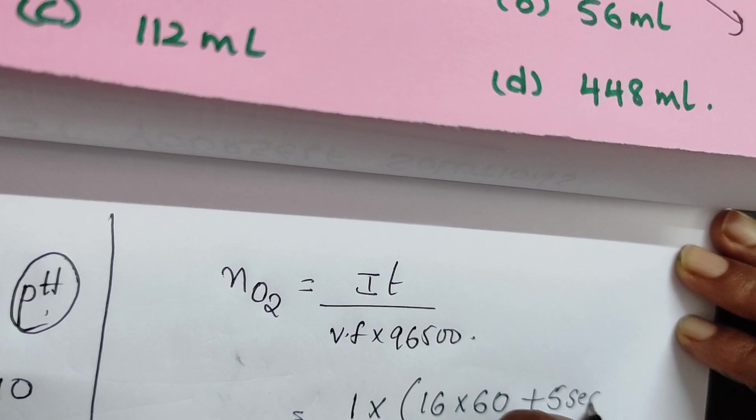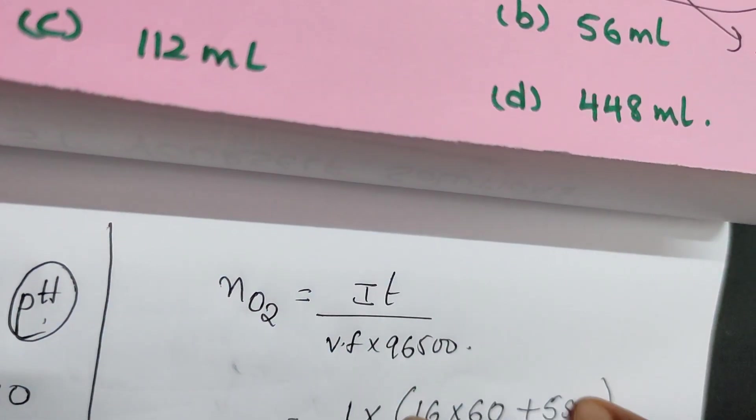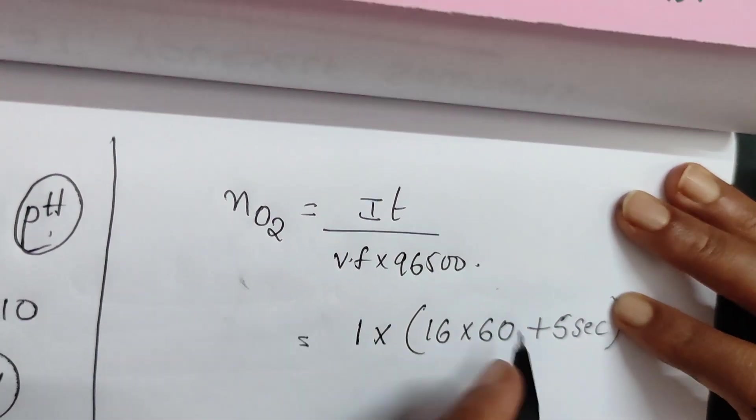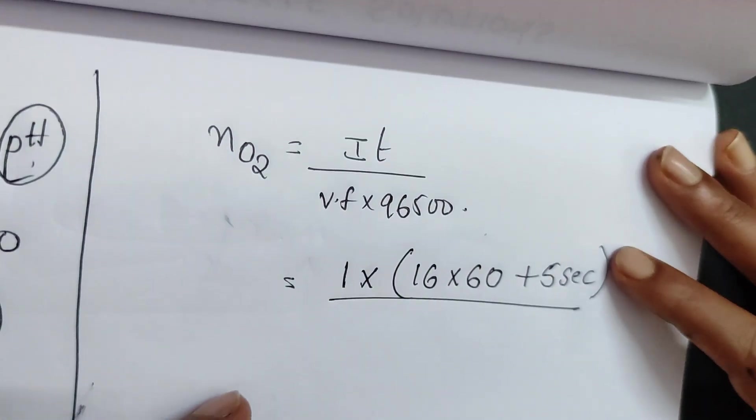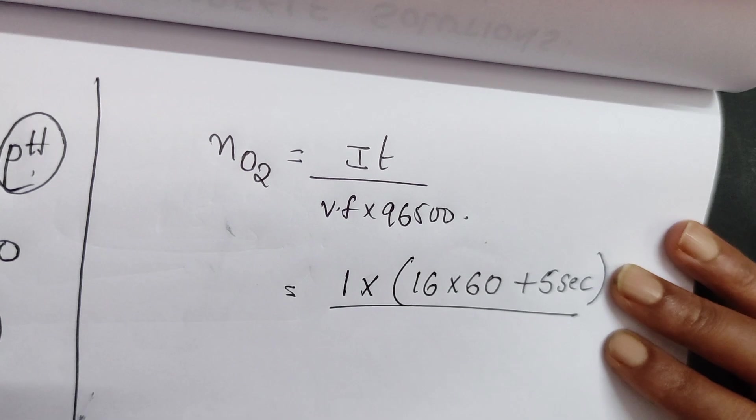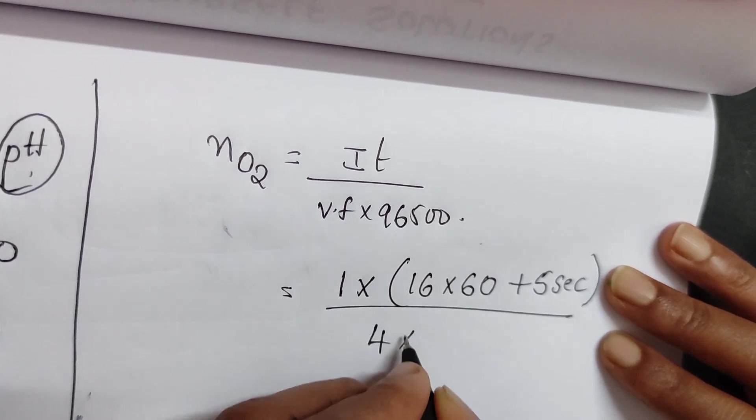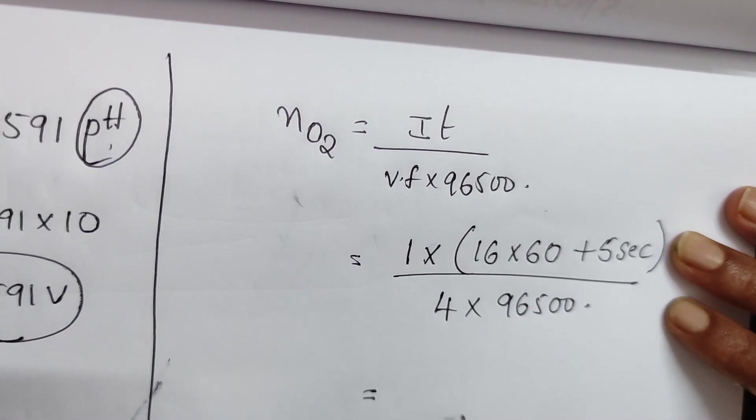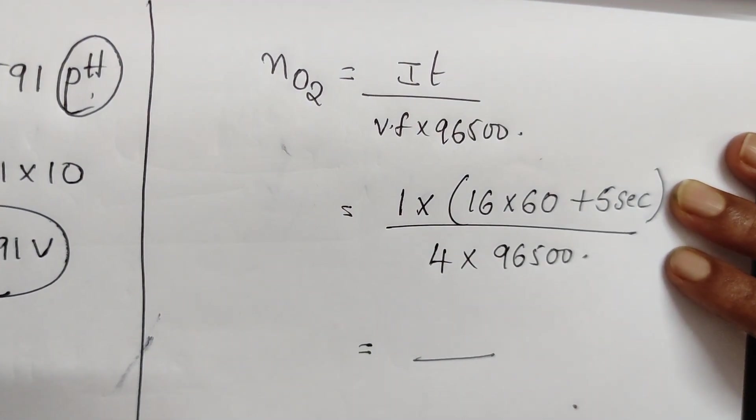16 into 60 seconds plus 5 seconds is given. 16 minutes 5 seconds, so convert 16 minutes into seconds then add that 5 seconds, because total time should be in seconds. Valence factor is 4 times 96,500. Just solve this, you will be getting the number of moles.